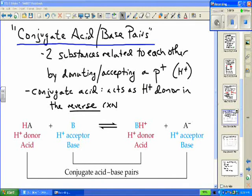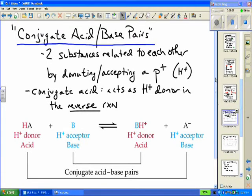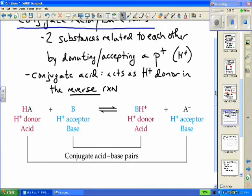So in the Bronsted low model of acids and bases, you have these things called conjugate acid-base pairs. And they are substances that relate to each other by either donating or accepting a proton or a hydrogen ion. And remember, whenever you see the word conjugate, it means in the reverse direction.